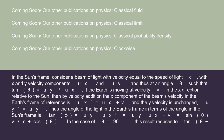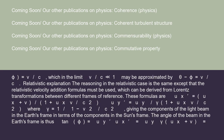Classical explanation: In the Sun's frame, consider a beam of light with velocity equal to the speed of light c, with x and y velocity components ux and uy, at an angle theta such that tan(theta) = uy/ux. If the Earth is moving at velocity v in the x direction relative to the Sun, then by velocity addition the x component of the beam's velocity in the Earth's frame is ux' = ux + v, and the y velocity is unchanged, uy' = uy. Thus the angle of the light in the Earth's frame is tan(phi) = uy/(ux + v) = sin(theta)/(v/c + cos(theta)). In the case of theta = 90°, this reduces to tan(theta - phi) = v/c, which in the limit v/c << 1 may be approximated by theta - phi = v/c.